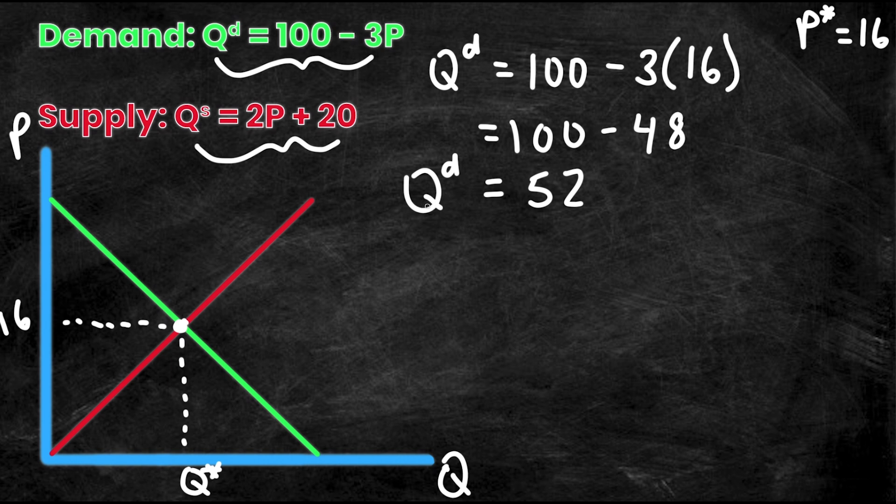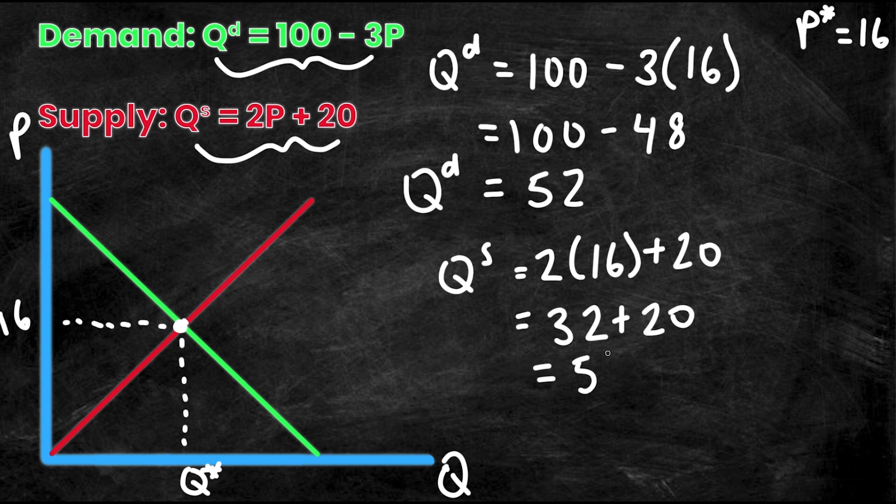If it doesn't, then we know we've done something wrong. So let me sub it in here to Qs is equal to 2 times 16 plus 20. This is simply equal to 32 plus 20. And what do you know, this is also equal to 52. So Qs and Qd with a price of $16 would both equal 52 for quantity. Therefore, I know that my Q star is 52. And just like that, we've solved for both Q star and P star, which is a point 52 comma 16, where P star is 16 and Q star is equal to 52.